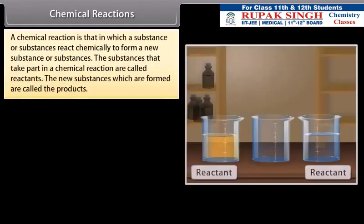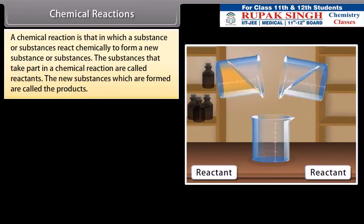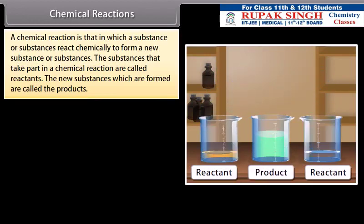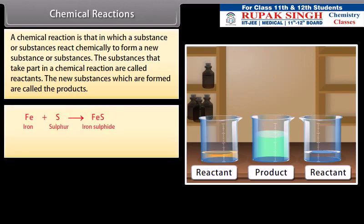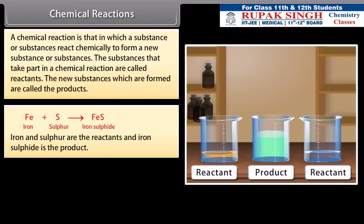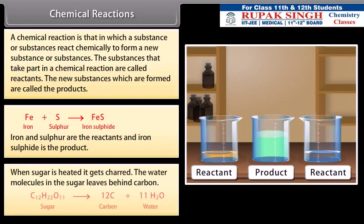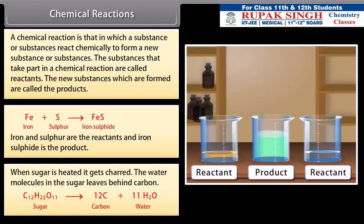Chemical reactions: A chemical reaction is that in which a substance or substances react chemically to form a new substance or substances. The substances that take part in a chemical reaction are called reactants. The new substances which are formed are called the products. Iron plus sulfur gives iron sulfide. Iron and sulfur are the reactants and iron sulfide is the product. When sugar is heated, it gets charred. The water molecules in the sugar leave behind carbon.